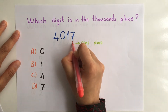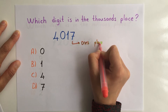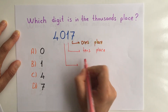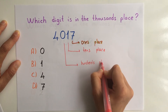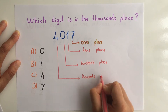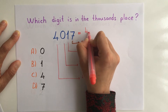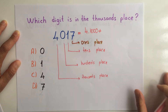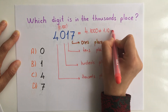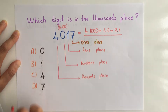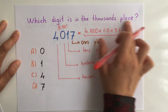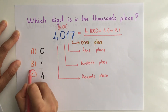One is on the tens place, and you can see zero on the hundreds place. Is this difficult? No, I don't think so. Four is on the thousands place — it's very easy. So the number is 4 times thousand, plus 0 times hundred, plus 1 times ten, plus 7 times one. It's four thousand and seventeen. Which digit is in the thousands place? It is four — that's the answer.